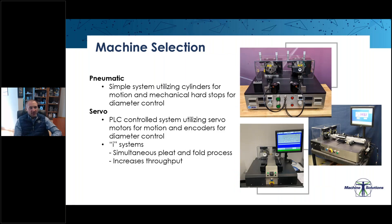For machine selection, we have two basic types of machines: a pneumatic and servo. The pneumatic systems utilize cylinders and air pressure to open and close the heads, and mechanical hard stops to control diameter. The pressure can be adjusted by the user to apply various amounts of force on the pleat or fold side. The hard stops can also be adjusted to create different closed diameters for the fold head or open diameters for the pleat head.